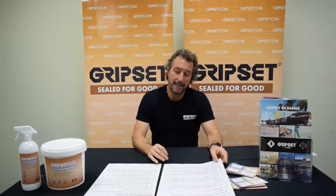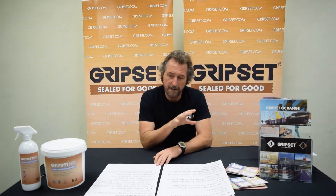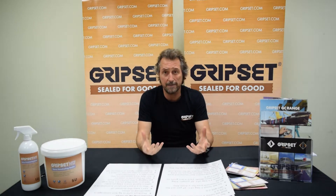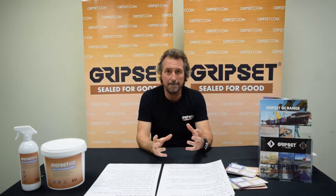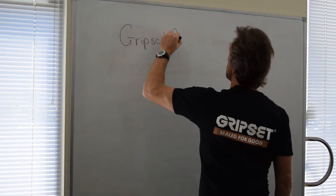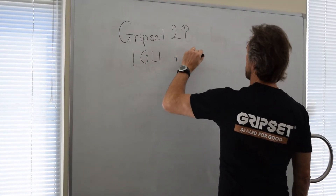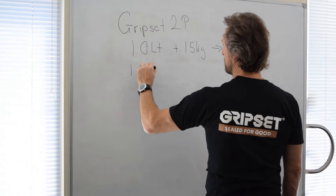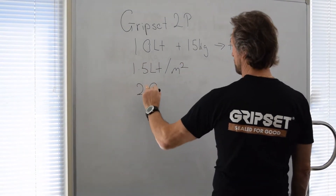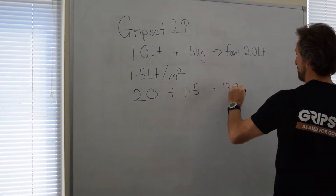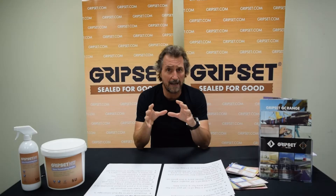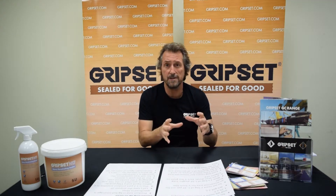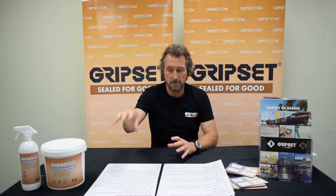The next piece is converting kilos to liters, which is a little more tricky. I'll talk about two-component products. We've got the GripSet 2P, which is a 15kg bag and a 10-liter pail of liquid. When you mix those together, it forms 25kg in weight, but you need to look at the volume it forms. Our data sheet tells you that when you mix the two together it forms 20 liters, and our coverage is still 1.5 liters per square meter. So from a 20-liter unit you'll get about 13.3 square meters. You've got to work back to the literage.